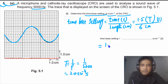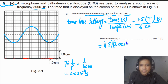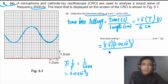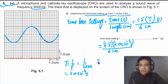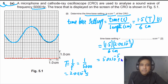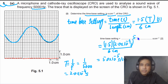Now we simply plug in: we have 1.5 multiplied by the time period of 2.0 × 10⁻⁴ seconds, divided by the length of 6 centimeters. Solving this, the final answer is 5.0 × 10⁻⁵ seconds per centimeter. So our answer is 5.0 × 10⁻⁵ s/cm.